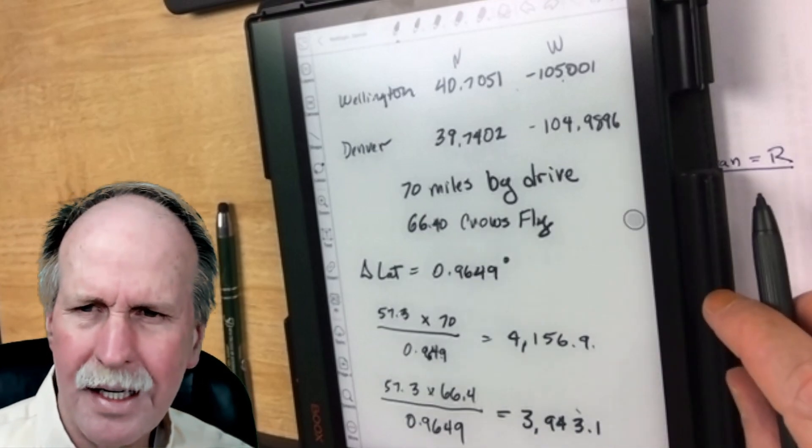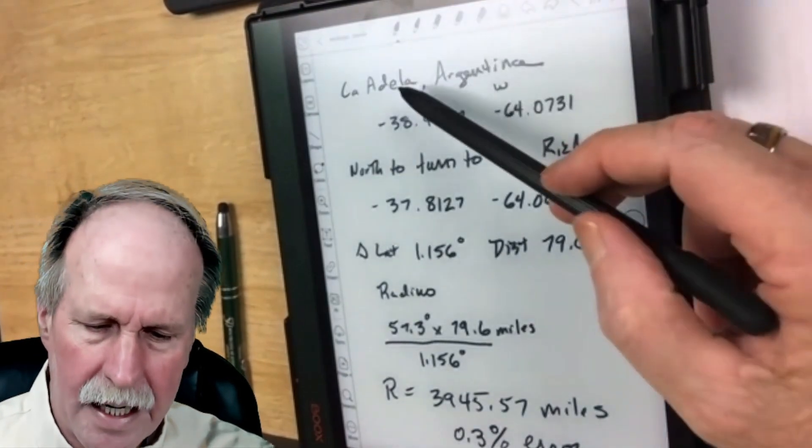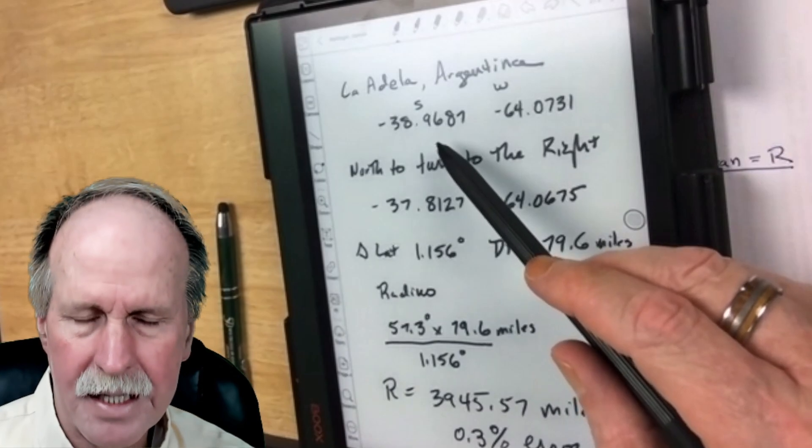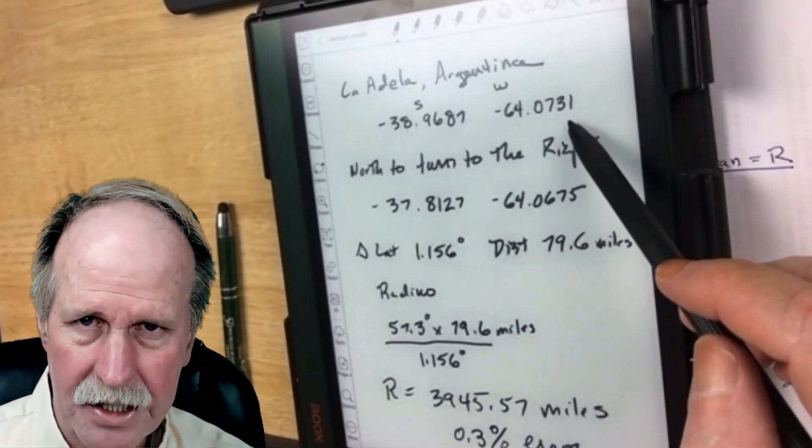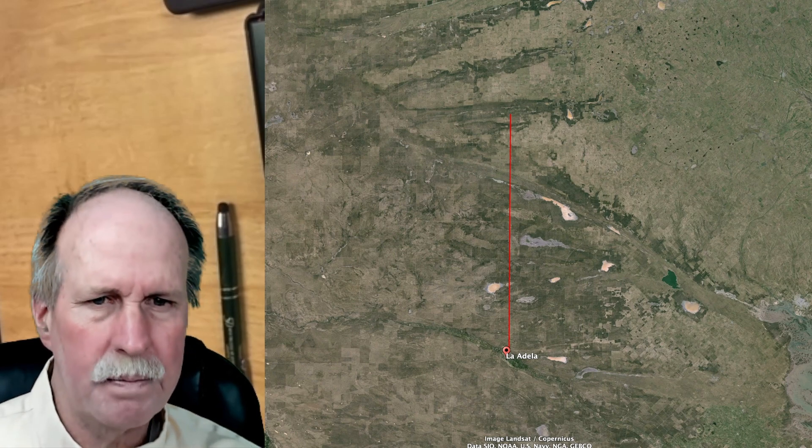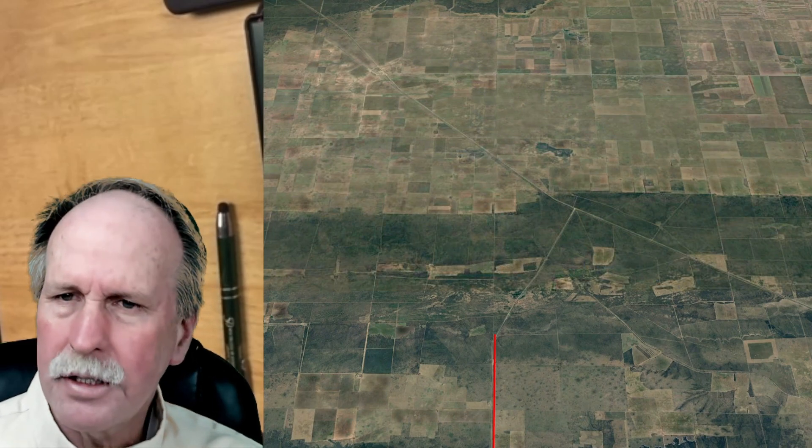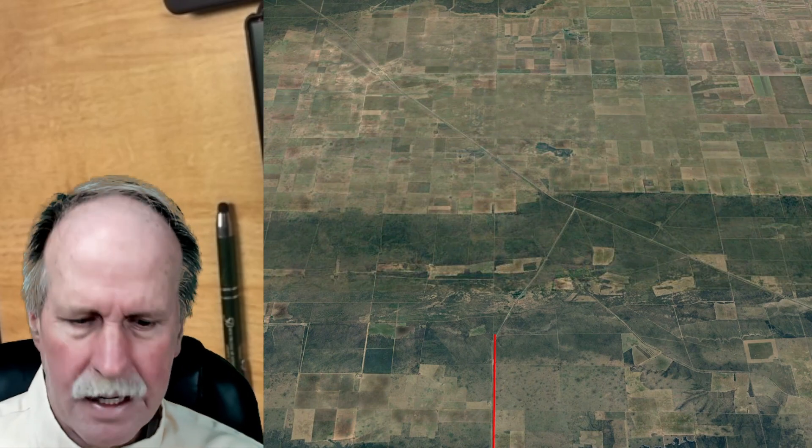Does this only work in Denver? Well, turns out, no. In South America, there's a little town called Adalia, and that's in Argentina. Here are the coordinates. It's 38.9687 degrees south, 64.0731 degrees west. So here is La Adela, and if you look at the north end of this road, there's a little bend in it. This is a very straight road that goes due north, but right up here at the end, there's a little bend. Let me show you that. So here's the north end of the road. You see this sharp turn to the right. I stopped the measurement at that turn.